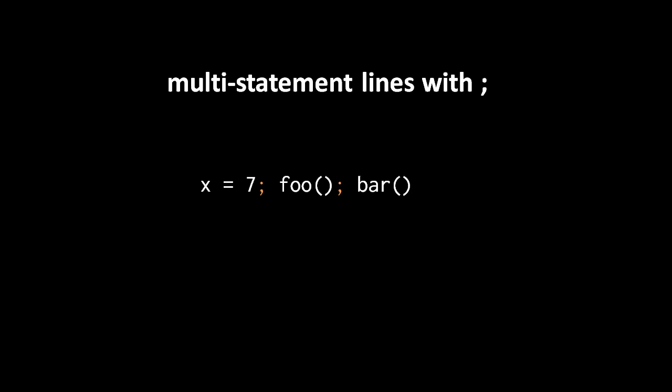So here we have on one line three statements: x equals seven, an invocation of foo, and then an invocation of bar. And those of course are executed left to right. So it's really just the same as writing them on three successive lines. It's just a stylistic choice here to put them on one line.